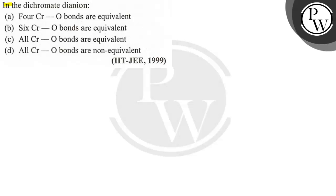Hello, let us see this question. In the dichromate dianion, four options are given: A, B, C, D.